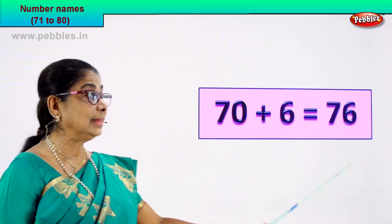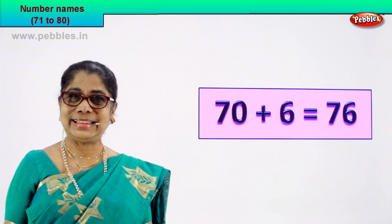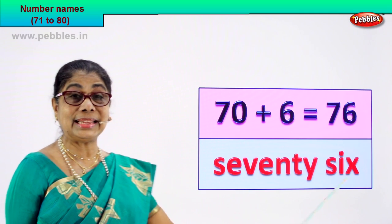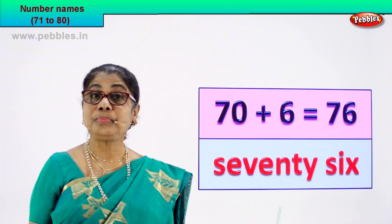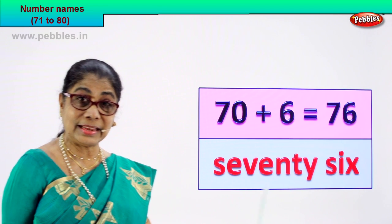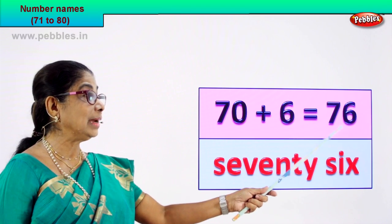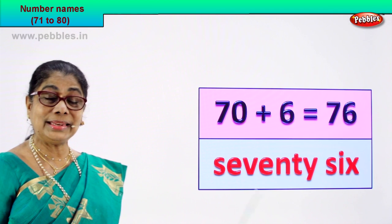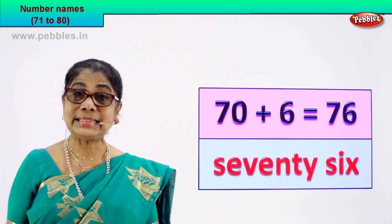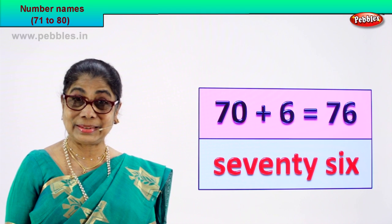How do we write its name? You know the spelling of 70, you know the spelling of 6, so how do we write the numeral's name? You write it as seventy-six. Spell: s-e-v-e-n-t-y — 70, then s-i-x — 6. So the numeral 7 and 6 — 76. You write it as s-e-v-e-n-t-y, s-i-x — 76. Good.